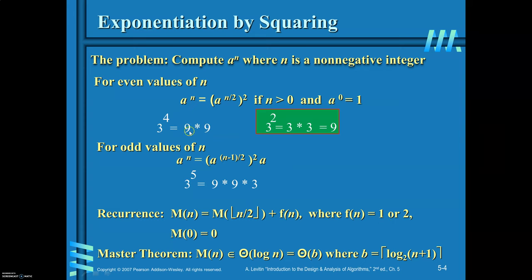For example, look at 3^4. If you already know 3^2, then how do you find 3^4? Just square it — that is 9 into 9, only one multiplication. If you want to find 3^5, you already have 3^2, so 3^2 into 3^2 into 3 — that is 9 into 9 into 3 — so 2 multiplications. So f(n) can take the value 1 or 2. When n equals 0, a^0 equals 1. This is how you can write the recurrence relation to compute a^n by the decrease by constant factor method.